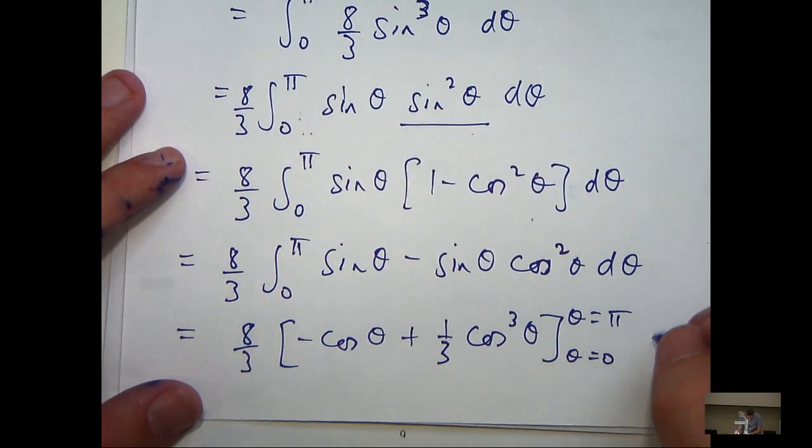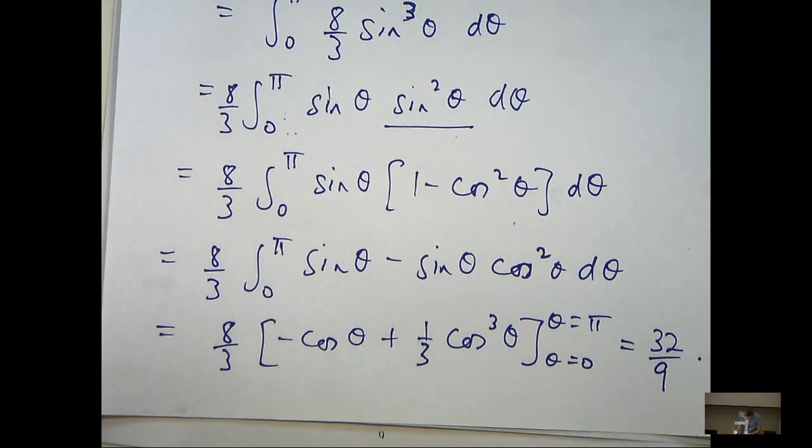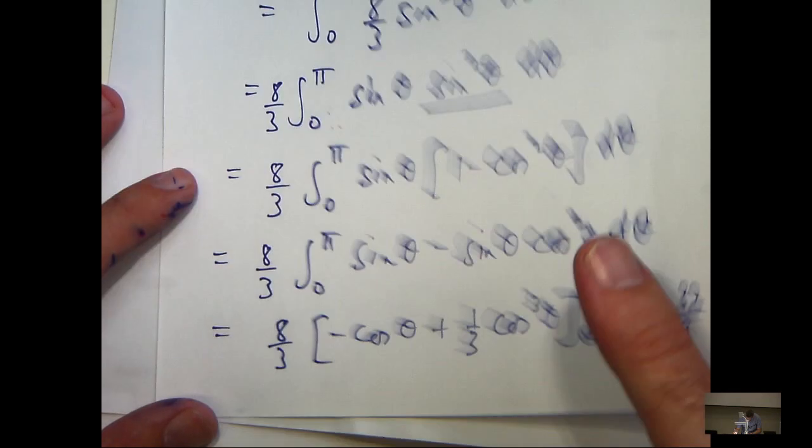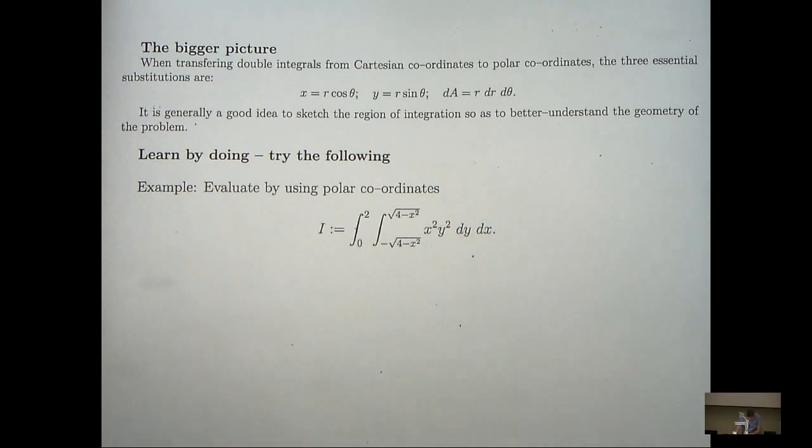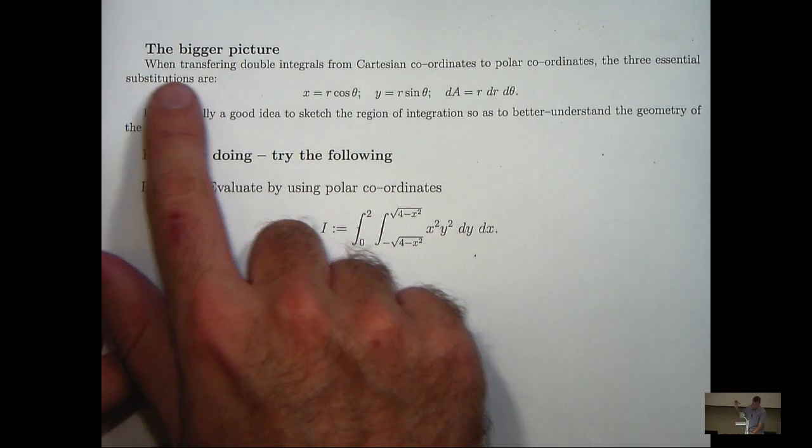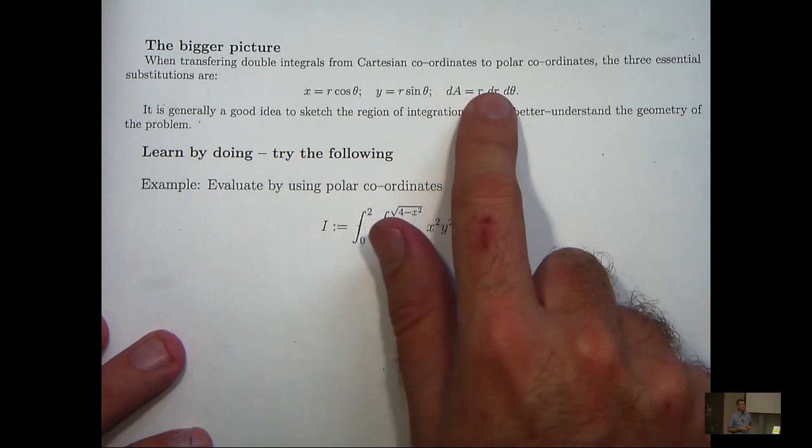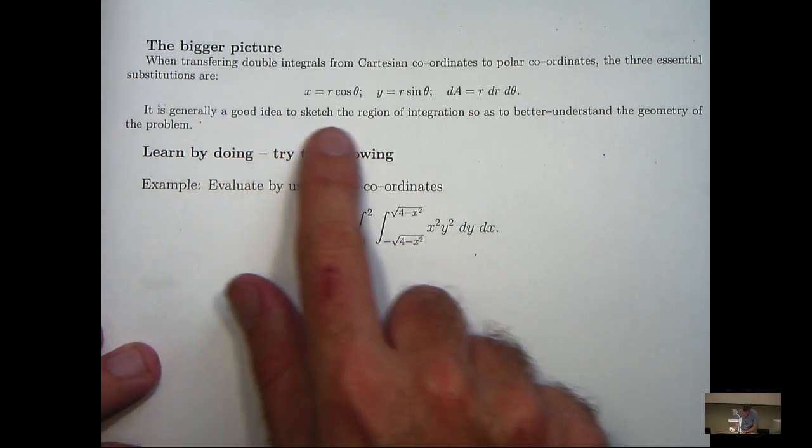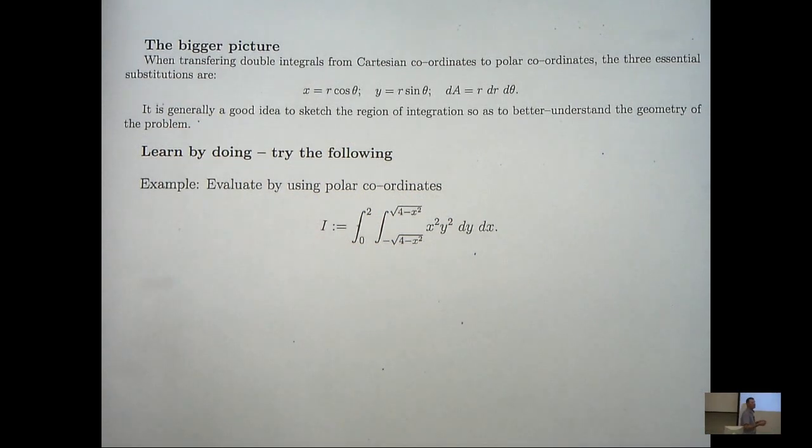So what I need to do now is sub in and simplify. So if I do that, I will end up with the following answer. So that's the problem finished. You can see it was quite long and we spent a lot of time on the region of integration. So let's look at the bigger picture. Well, when working with double integrals and moving to polar coordinates, the following three substitutions are useful. And as you saw from the example, it's generally a very good idea to sketch the region of integration so as to better understand the geometry of the problem and have a greater chance of describing it in polar coordinates.